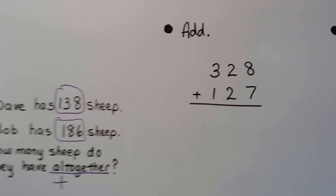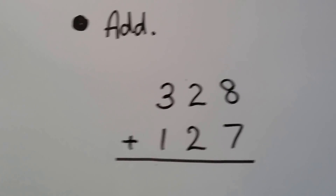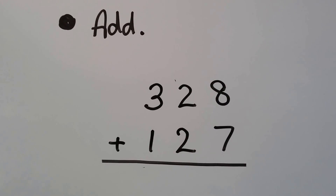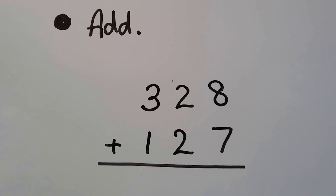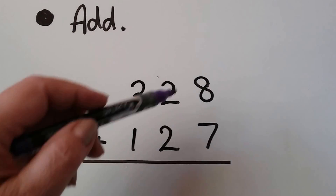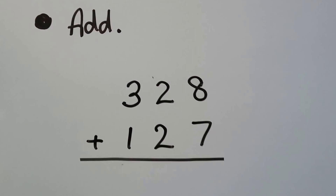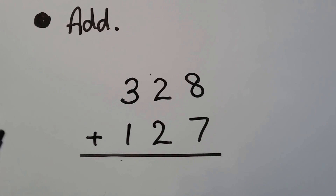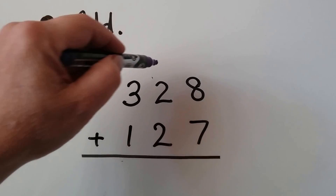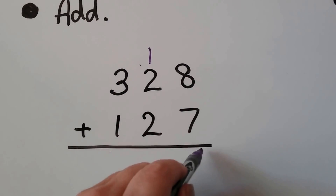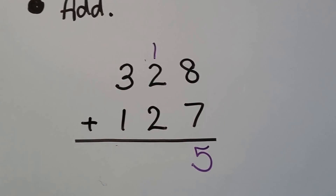See if we can add these using what we've learned. We have 328 plus 127. We start with the ones place: 8 plus 7. That's 15. We regroup the 1 from the 15 into the tens place and write the 5 in the ones place.